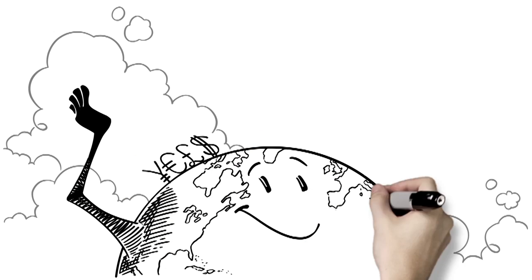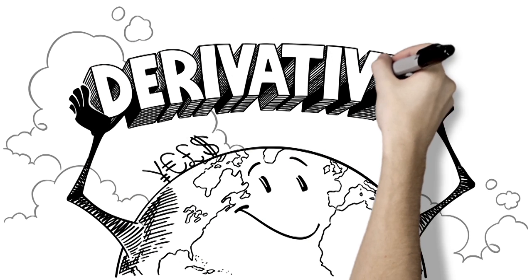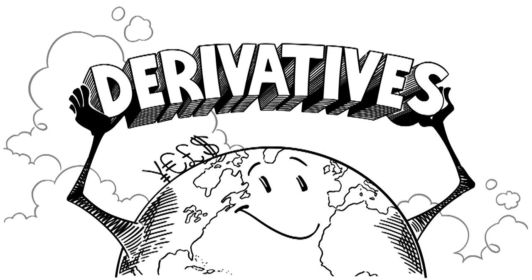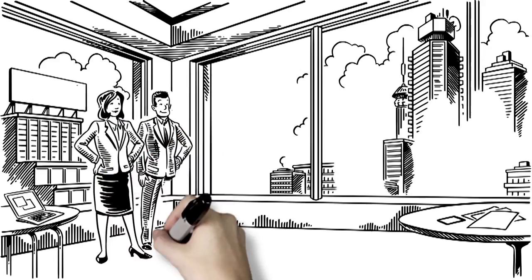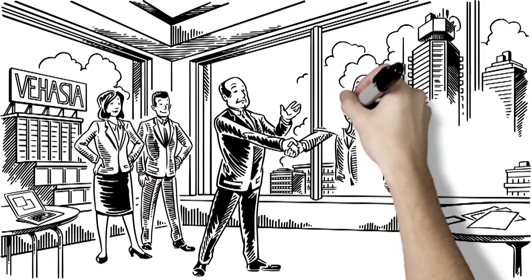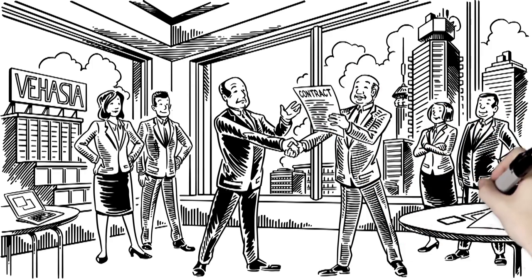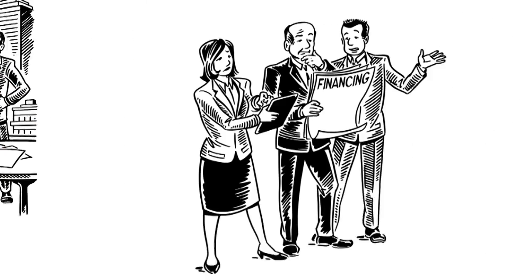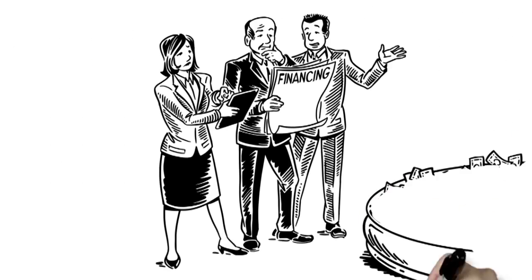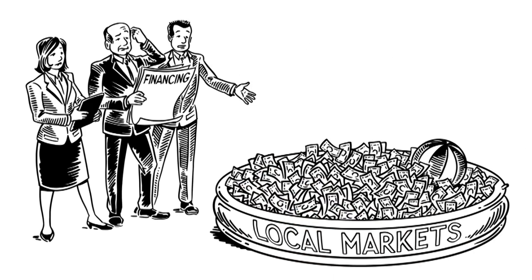Derivatives markets have always been global, which has greatly helped companies around the world better manage their risks. When a global company like Vahesia Construction wins a government contract to build a new highway system in Asia, it needs to get financing. Local markets might be too small for such a transaction.